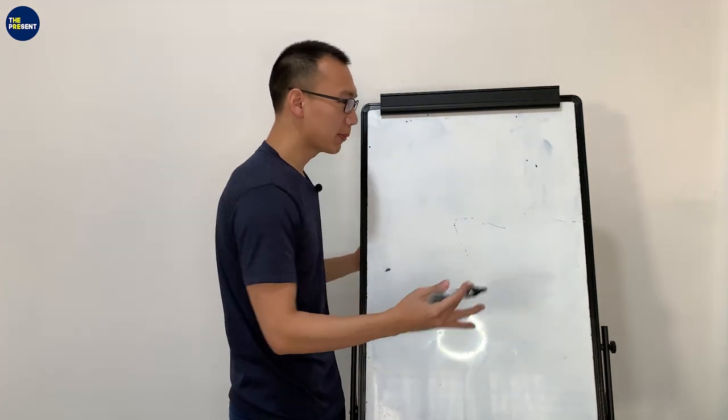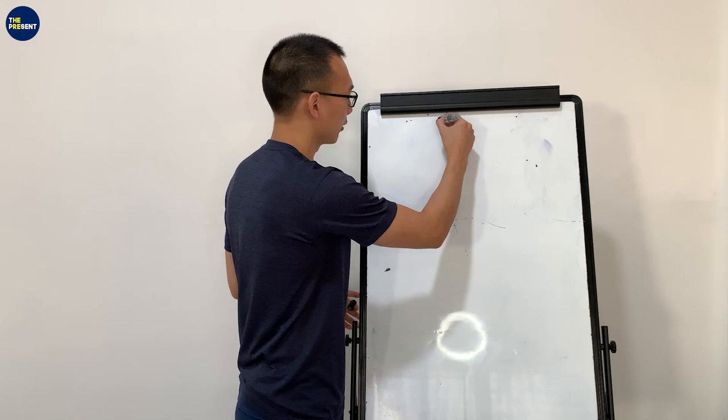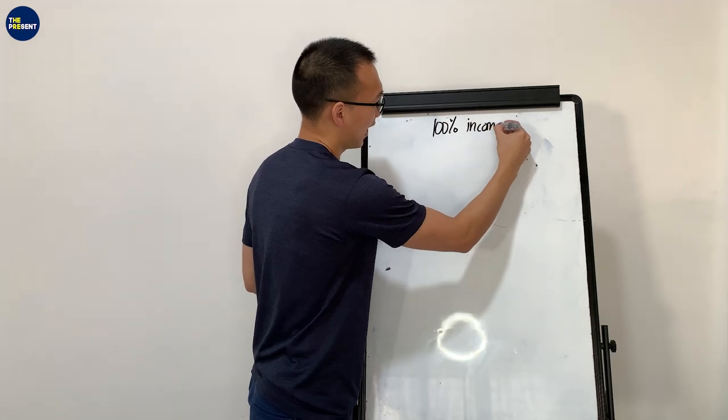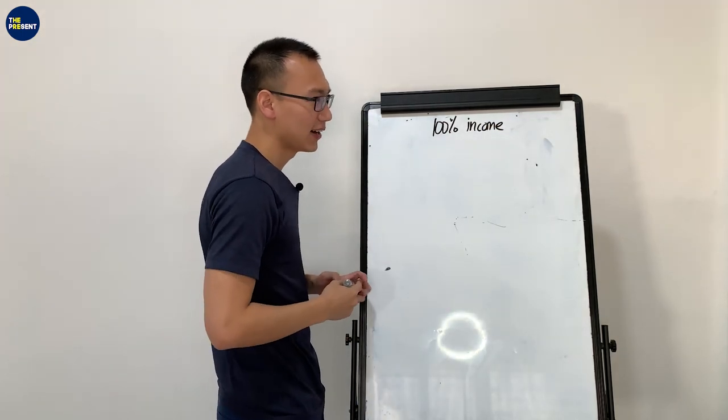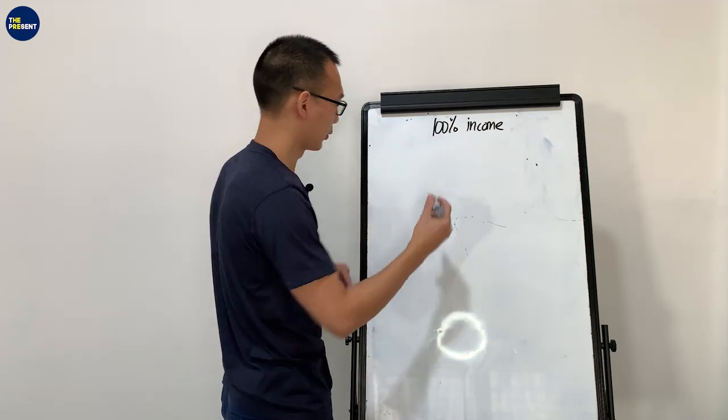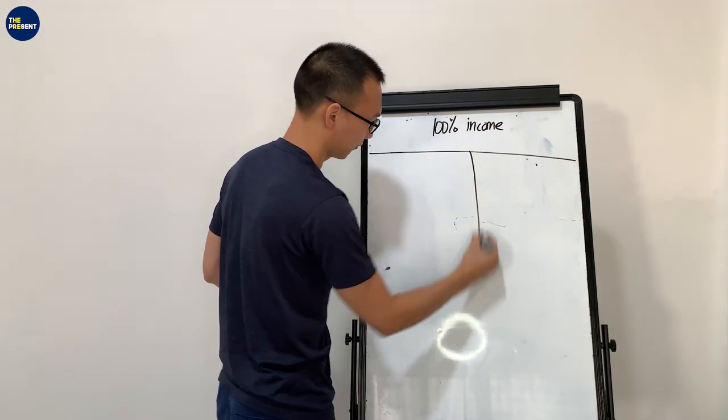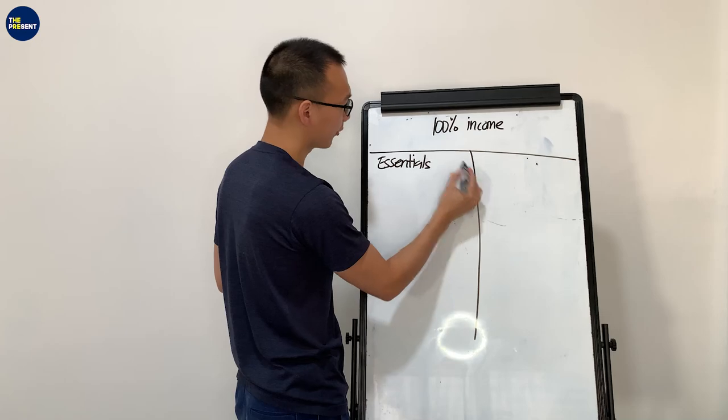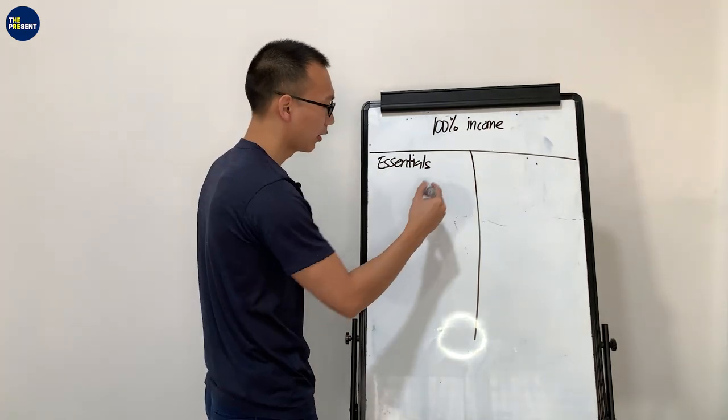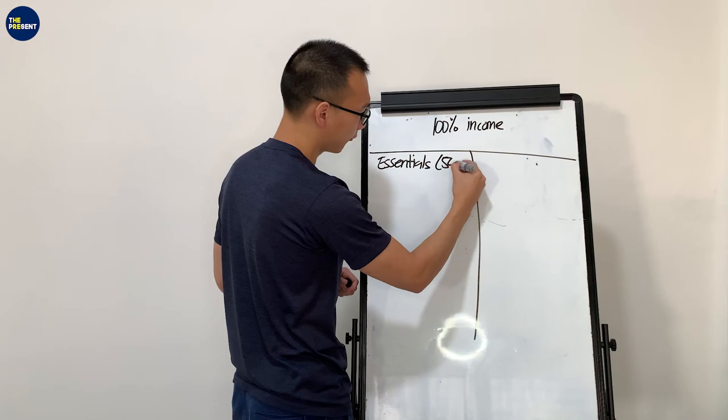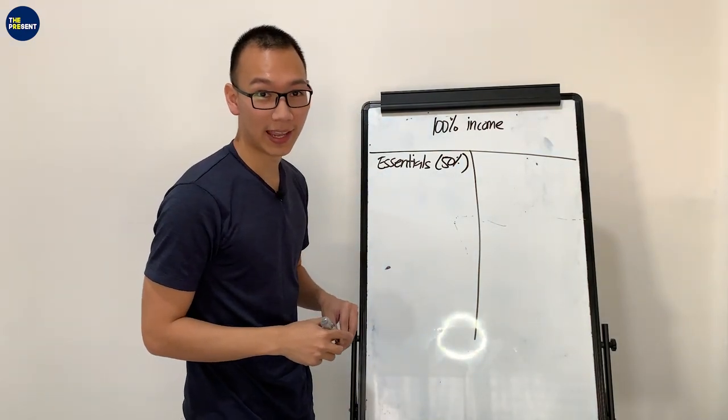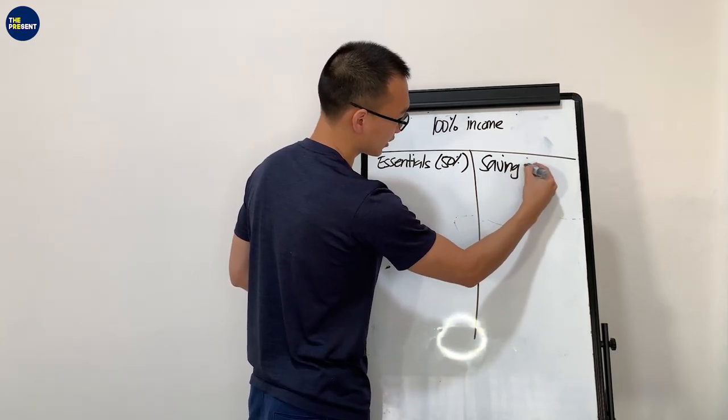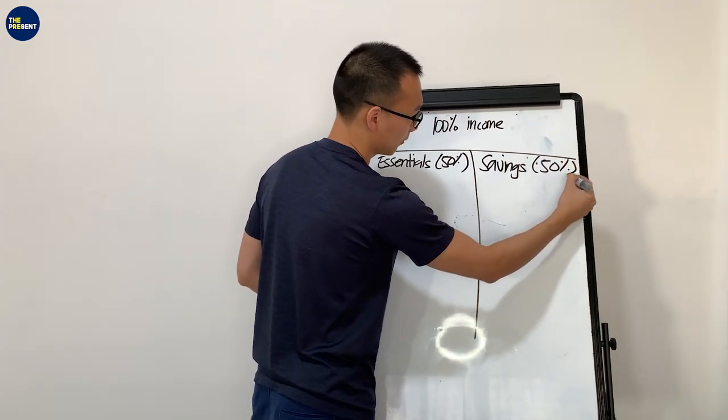Obviously, everybody has their own income stream. In our case, there is 100% of our income, and we're going to divide this into two areas. The first area is what we call essentials. From the 100% of our income, our essentials is actually 50%. And then our savings, which is also 50%.